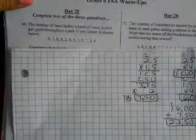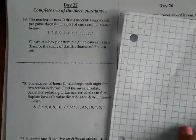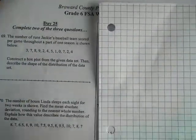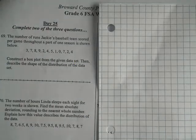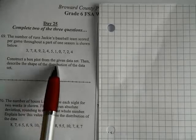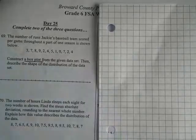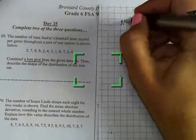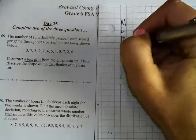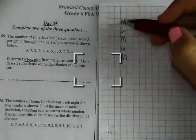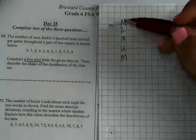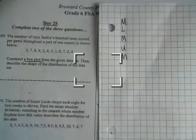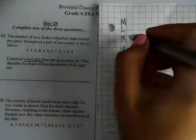Number 69: The number of runs Jackie's baseball team scored per game throughout part of one season is shown below. Construct a box plot. When you see 'box plot,' think of the rhyme: 'mom likes my unique muffins' — minimum, median, maximum, lower quartile, upper quartile — in that exact order. That will help you construct the box plot correctly.